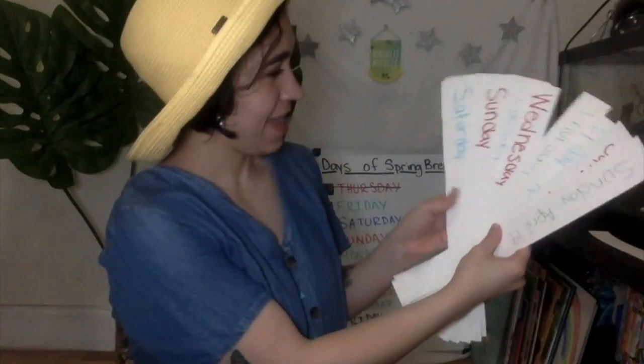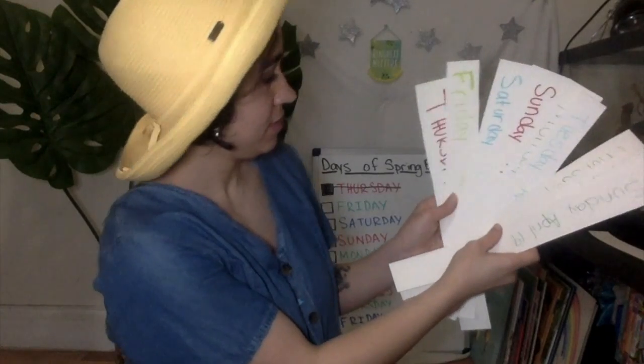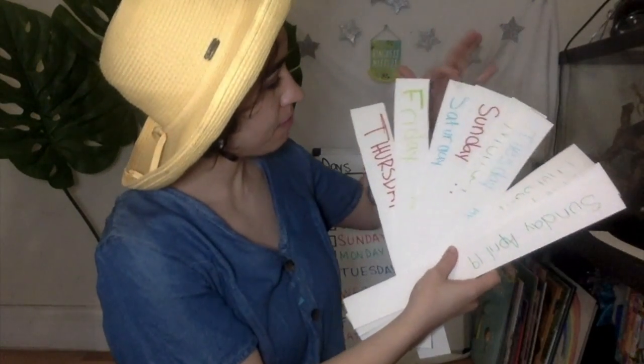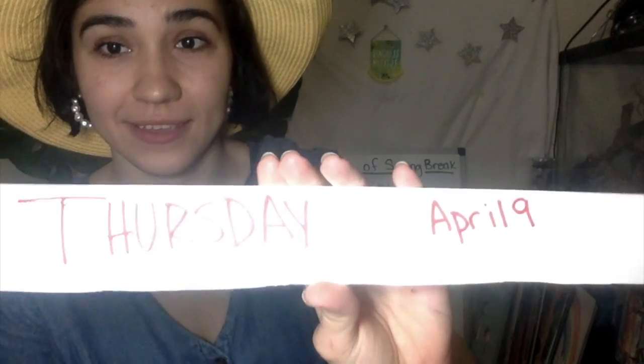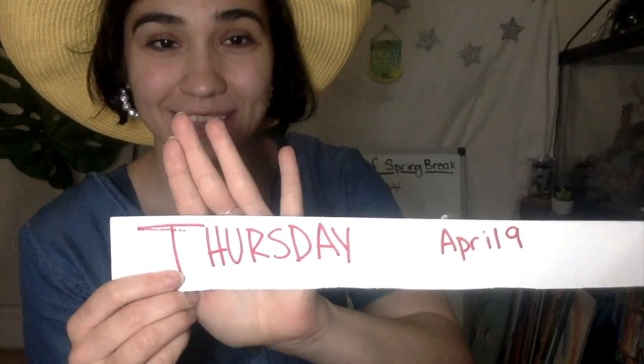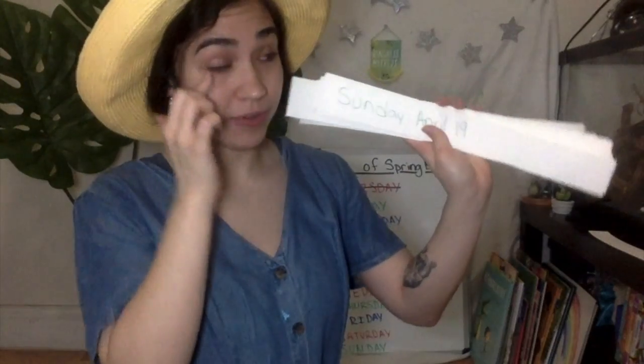Okay, I have all of my days in my pattern set up. It's the same pattern as our board — red, green, blue, red, green, blue. And I wrote the date on each. I wrote the day of the week and the date on each rectangle. I have all the way from Thursday, April 9th — that's tomorrow — all the way to Sunday, April 19th.